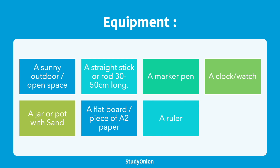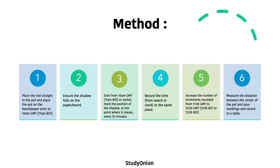Finally, you'll need a ruler and a pencil. For the method, step one is to place the rod straight into the pot filled with sand, and place the pot on top of the paper or board — preferably before 10 a.m. GMT, or 11 a.m. if you're doing it in British Summer Time. You want to ensure that the longest shadow you predict will occur will stay within the range of the cardboard.